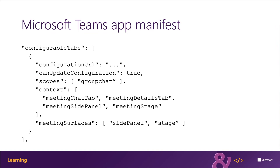The tabs context array determines what must be shown when a user invokes the app in a meeting depending on where the user invokes that app. This property, along with the scopes property, enables you to determine where an app must appear. The following context options apply to meeting apps, and your meeting app can support one or more of the following different contexts.